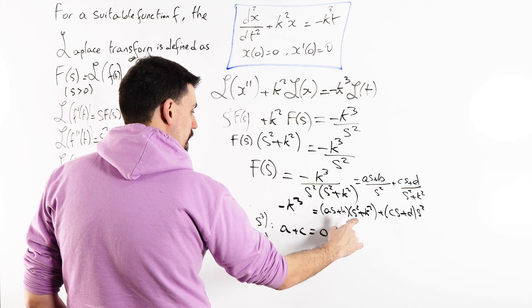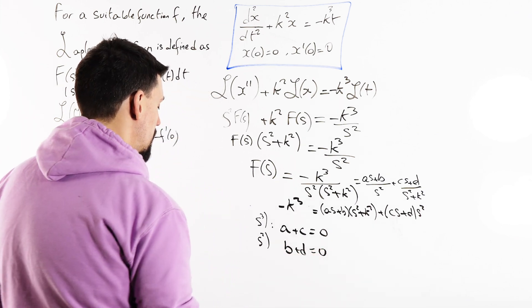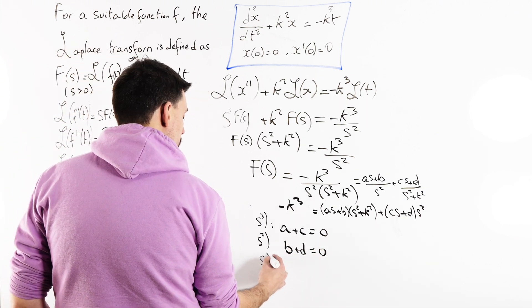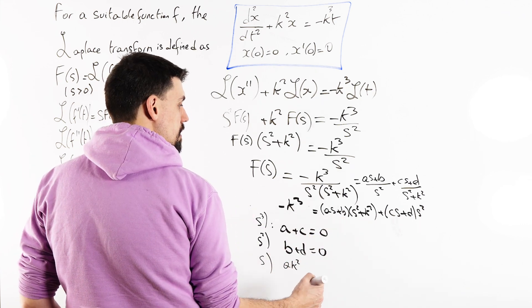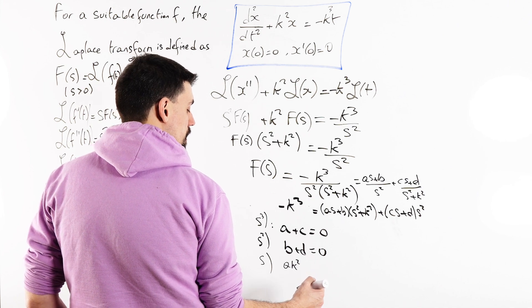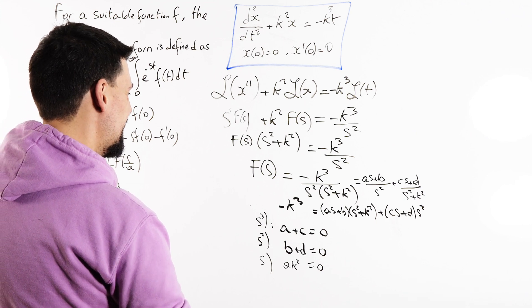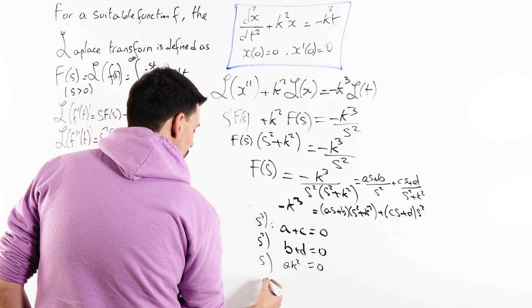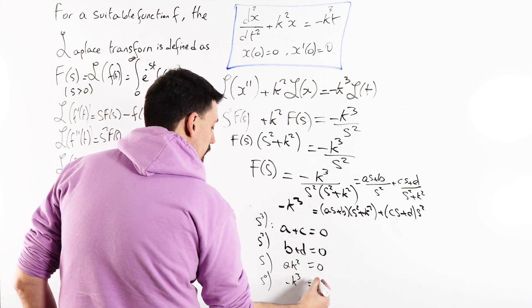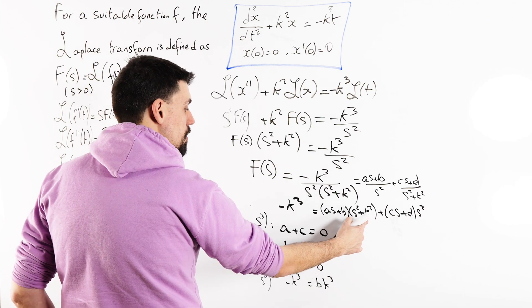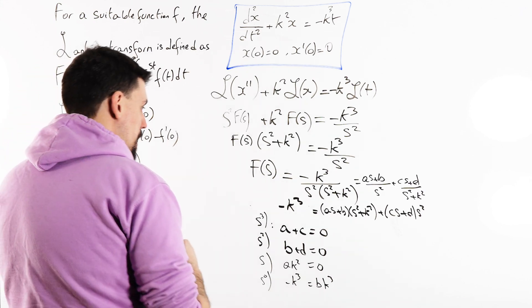Let's look at the s squares. How many s squares do I get? I get b s squared from there and I get d s squared from there. That's got to equal to zero. How about the s's? I get a k squared s's and that's it. So, that's got to equal to zero. Oh, this is getting spicy. So, let's just look at the constant terms. I should get minus k cubed. What constant terms do I get here? I get b k cubed and that's it.